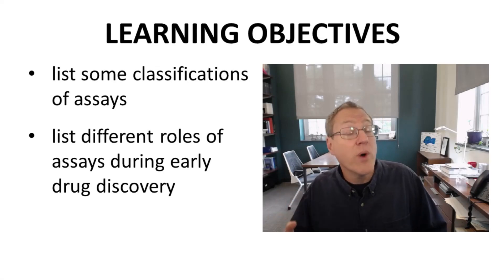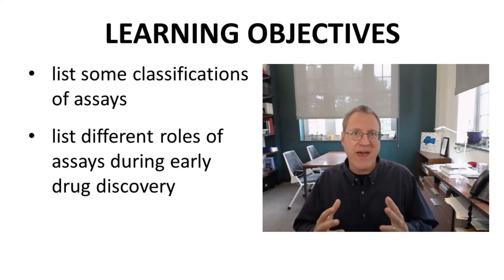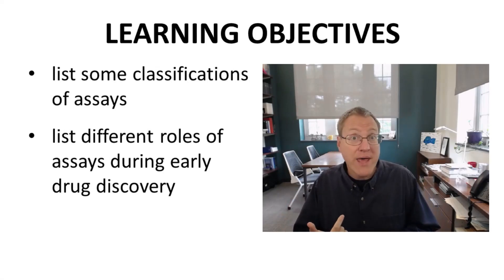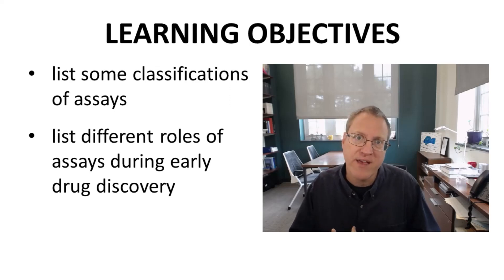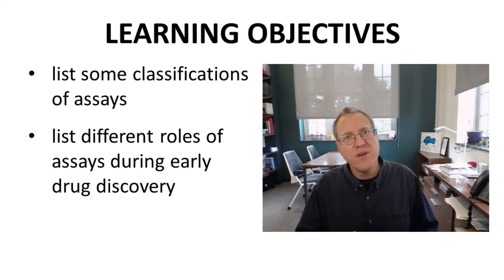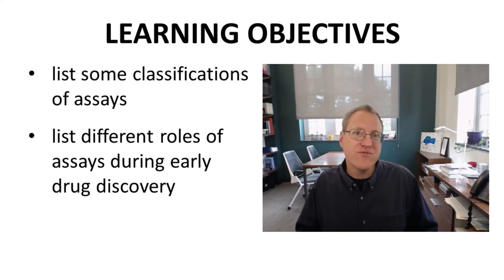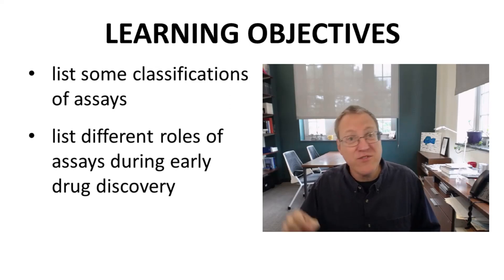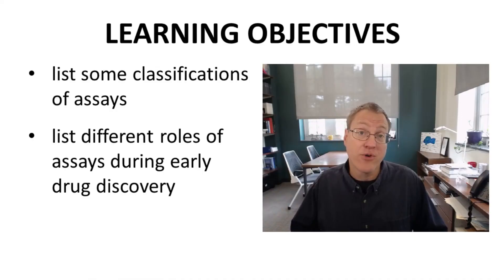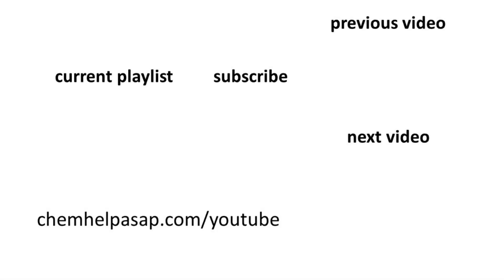We have listed some ways to classify types of assays, such as biochemical or cellular assays. We have also listed some different roles that assays fulfill based on the information that they provide during early drug discovery. I hope this video gave you a better understanding of the general types and usages of assays in drug discovery. Please leave a like, make a comment, or subscribe to the channel. Take care.